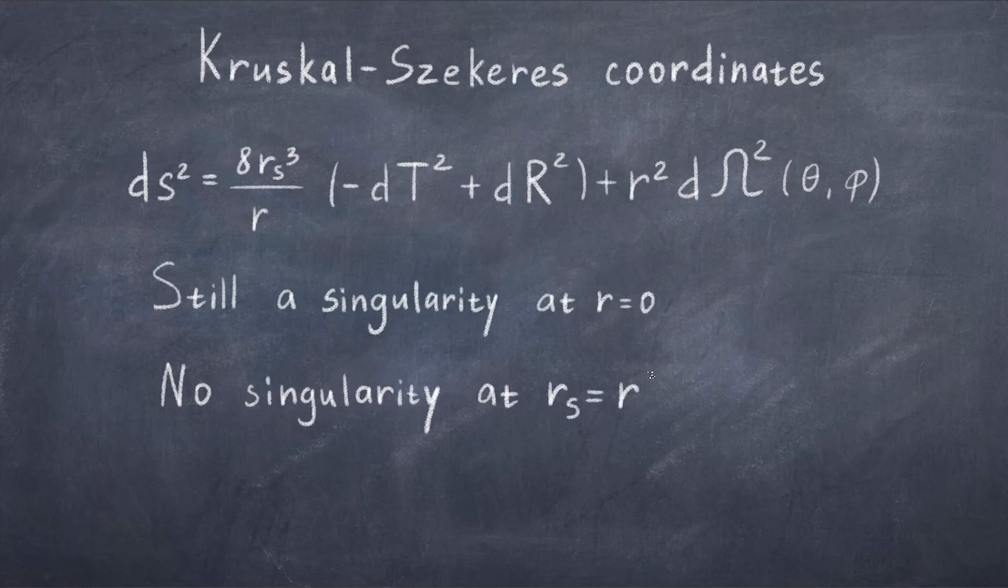This leads us to the question, what if a singularity does not have an event horizon? This is called a naked singularity. Such an object is found in general relativity, but it has never been discovered, and for good reason.